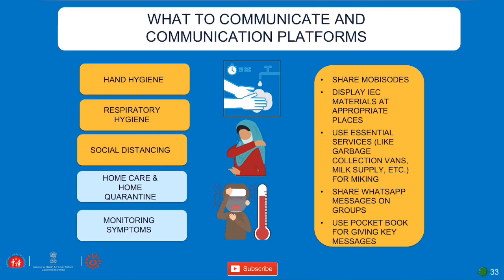Session 6 covers communication and personal safety. What to communicate includes hand hygiene, respiratory hygiene, social distancing, home care, and quarantine details. To spread this information to every individual in India, guidelines are displayed in public places and on essential service vehicles like garbage collection vans and milk supply vans. Stickers are pasted on these vehicles. WhatsApp group messages and pocket books with key messages are also used.